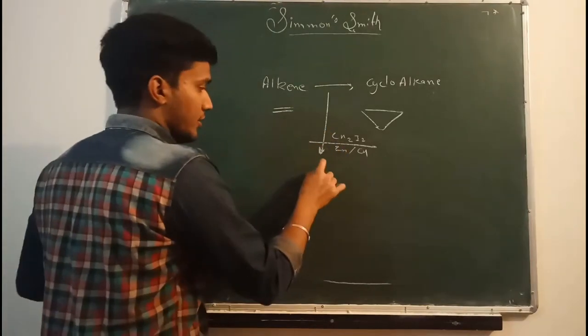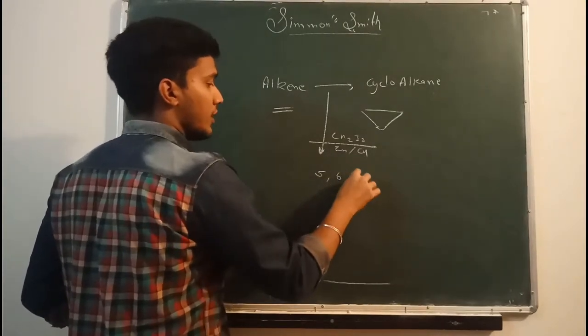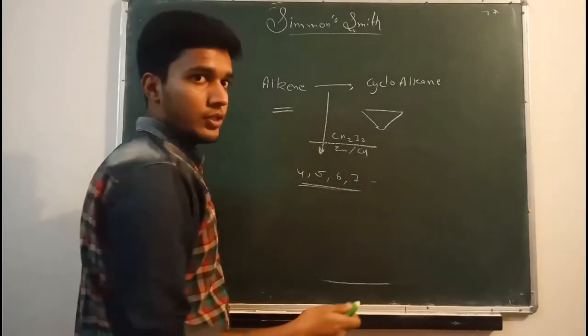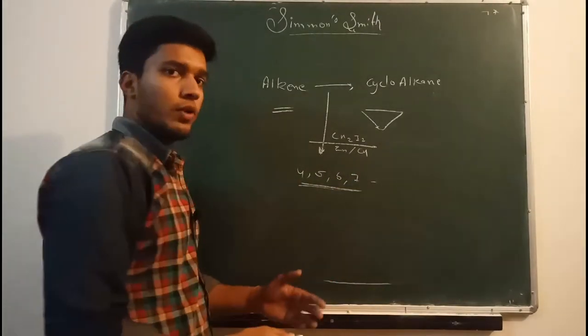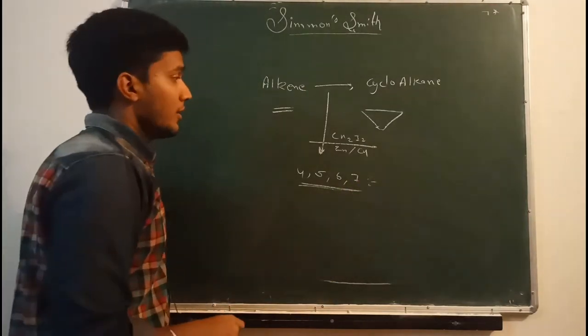And the other thing, the chain ring of 5, 6, or 7, or 4, this will form the cis formation. But after this, if the ring will go long and long, then the formation will be trans, trans-isomer.